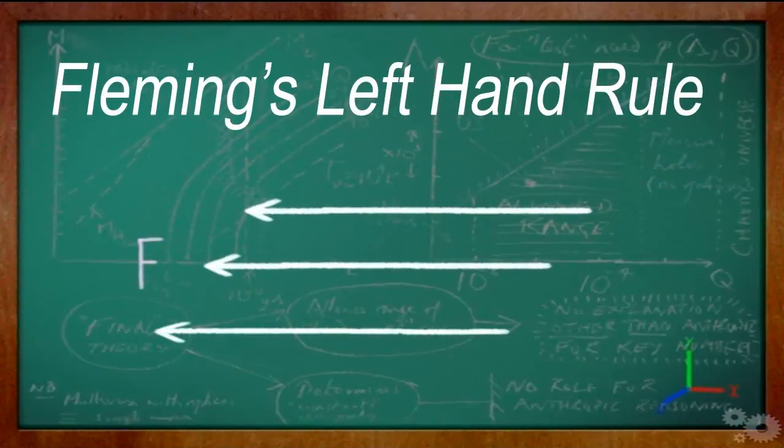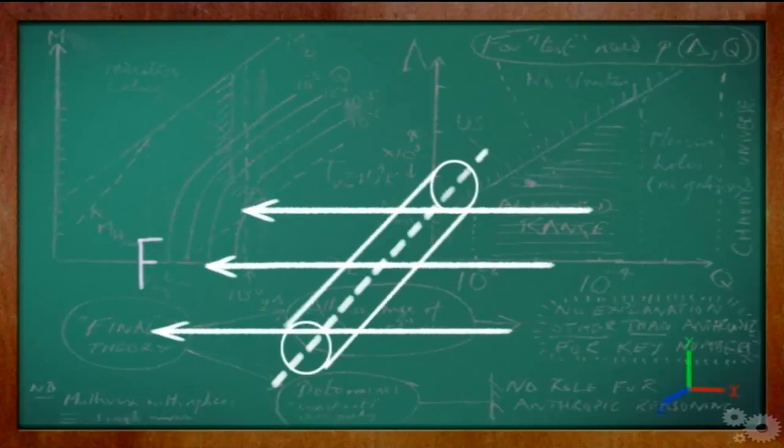Fleming's Left Hand Rule. When a wire carrying an electric current is placed in a magnetic field of a magnet, the wire experiences a force and the direction of the force can be determined by using the left hand in this way.